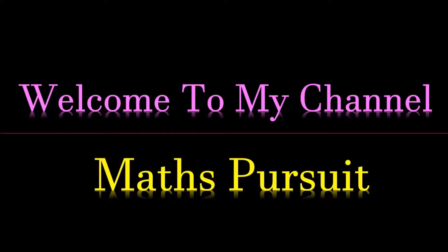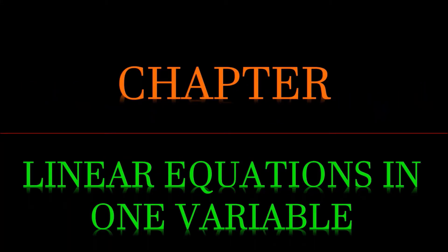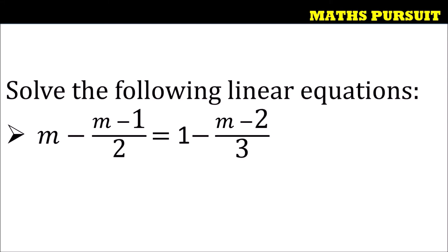Welcome to my channel Maths Pursuit. Today we will look into questions from the chapter called Linear Equations in One Variable. The given question is: solve the following linear equation, where the equation is m minus (m minus 1) divided by 2 is equal to 1 minus (m minus 2) divided by 3. Let us see how we can solve this.